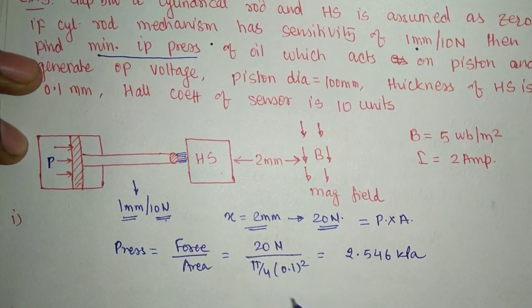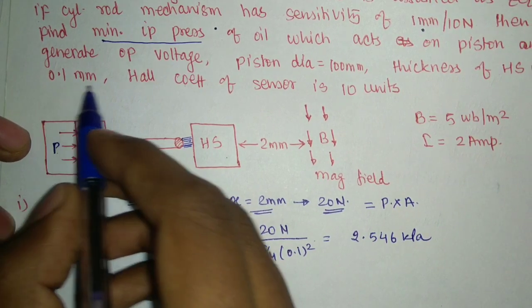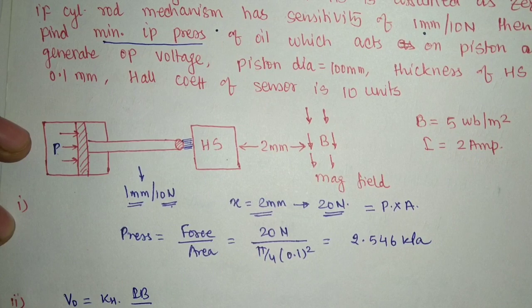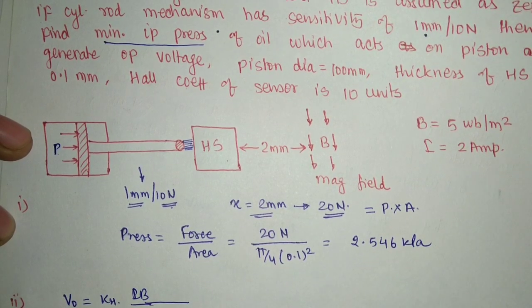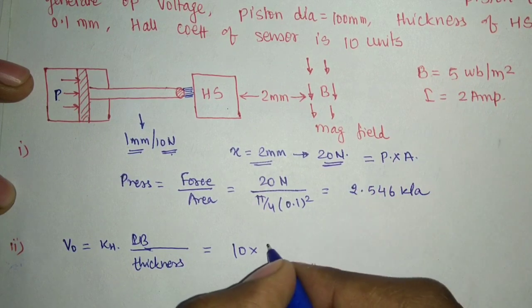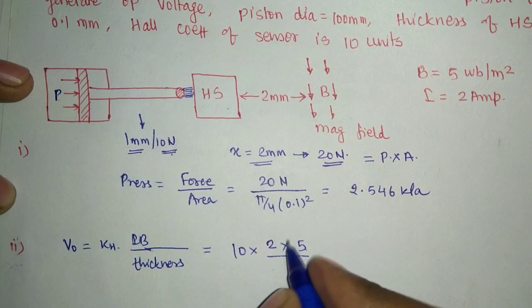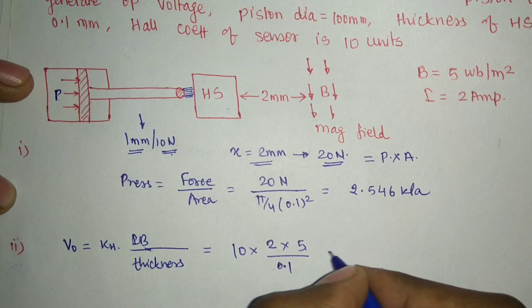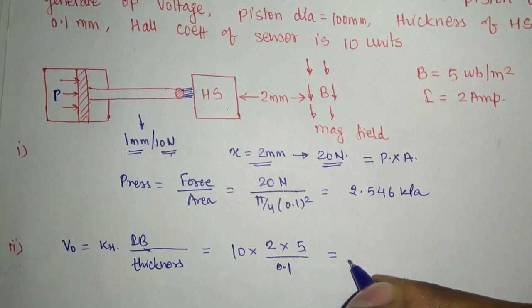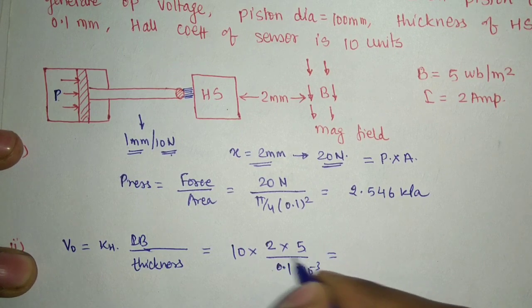In the second part we need to calculate the output voltage. If the thickness of the Hall sensor is 0.1 mm and the Hall coefficient is KH = 10 units, with current I = 2 A and magnetic field B = 5 Weber per meter square, then output voltage V0 = KH·I·B/W = 10 × 2 × 5 / (0.1 × 10⁻³). The thickness in meters is 0.1 mm = 10⁻⁴ m, which gives a large voltage value — the numerical calculation works out from these values.